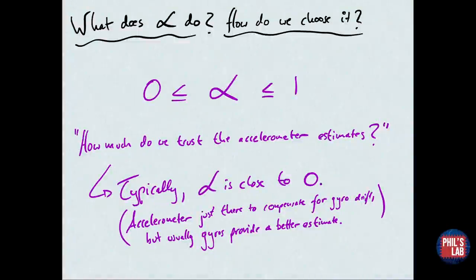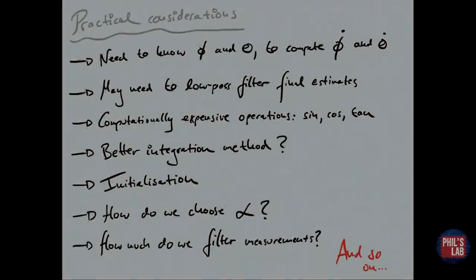Now alpha has cropped up quite a bit. The question is, what does alpha do and how do we choose it? Alpha is some constant between zero and one. It tells us how much we trust the accelerometer estimates. If alpha is close to zero, we prefer the gyro integral. If alpha is close to one, we prefer the gravity-based accelerometer estimates. Typically, alpha is very close to zero, something like 0.02 or 0.05. The accelerometer is essentially just there to compensate for the gyro drift rather than to provide an actual angle estimate.